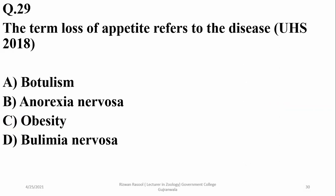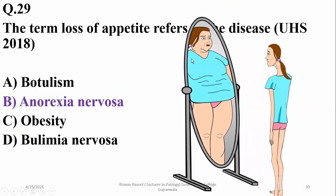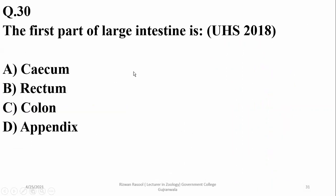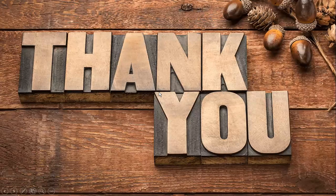The term for loss of appetite refers to the disease anorexia nervosa, which is more common in younger females. The first part of the large intestine is the cecum, which is also known for the appendix. So alpha is the right answer. That was all about a discussion of MCQs related to the human digestive system. The next video will be about the respiratory system. Thank you.